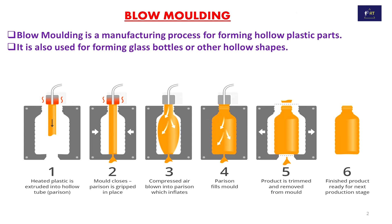These are the different steps of the blow molding process. First, heated plastic is extruded into a hollow tube called a parison. Second, the mold closes and the parison is gripped in place. Third, compressed air is blown into the parison, which inflates it.